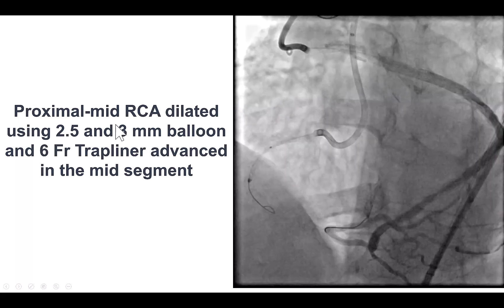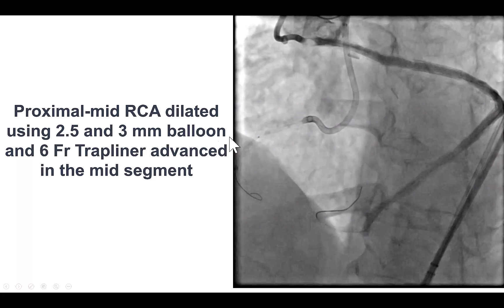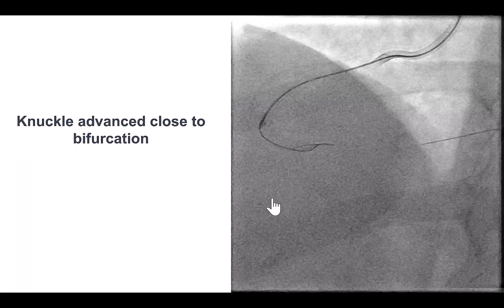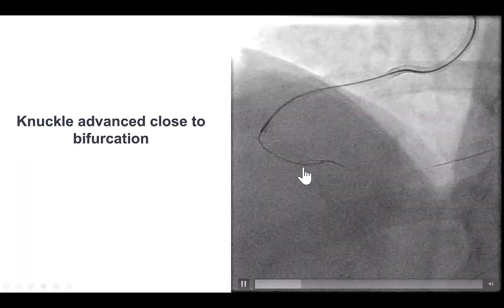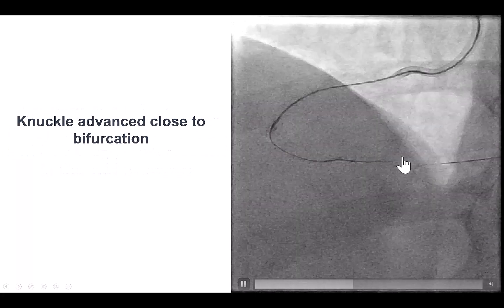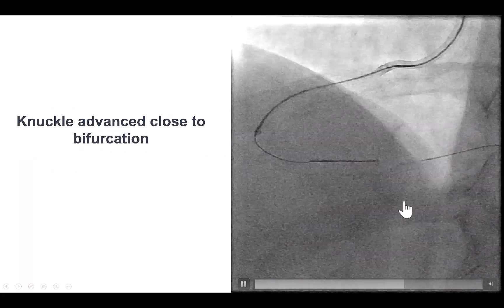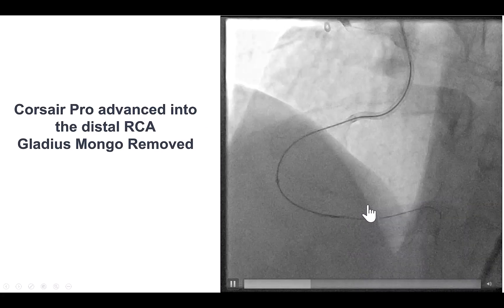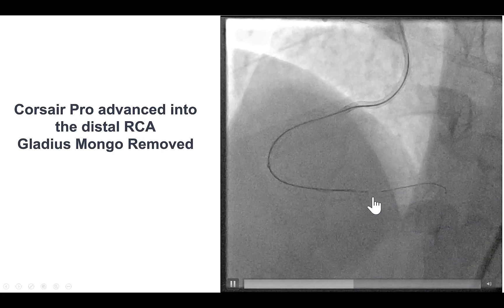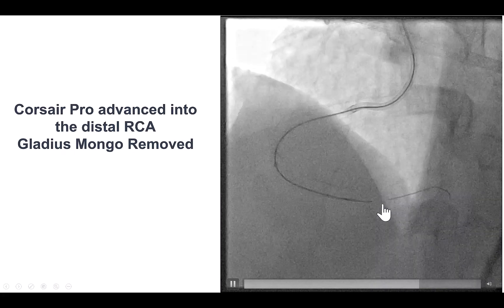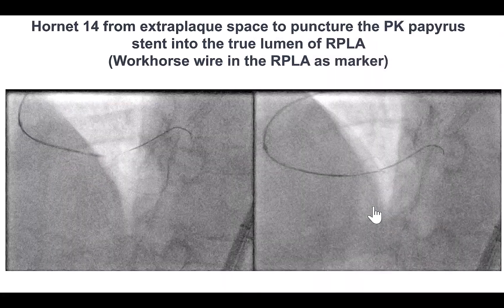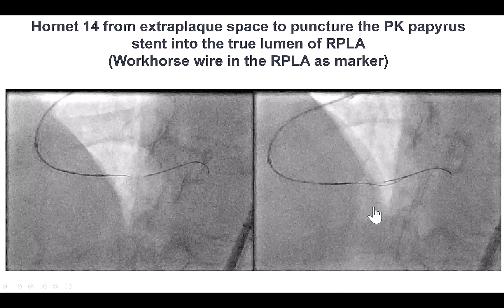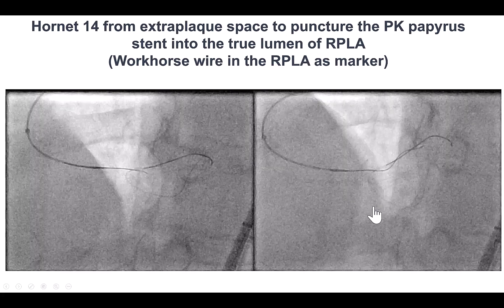We predilated that segment with a balloon and were able to advance the guide extension further down into the right coronary artery. We then knuckled essentially all the way to the PDA-posterolateral bifurcation. Now we were in the situation where we were next to the distal true lumen, but the PK papyrus stent was in the way. Getting through that area was going to require high penetrating power.